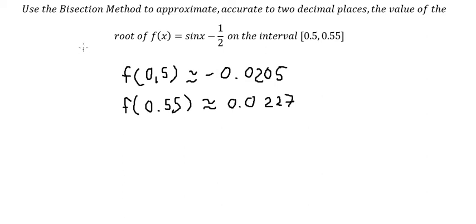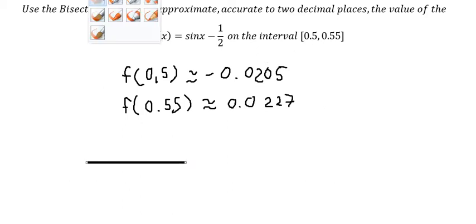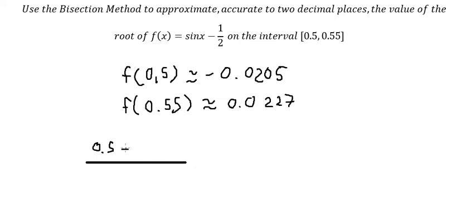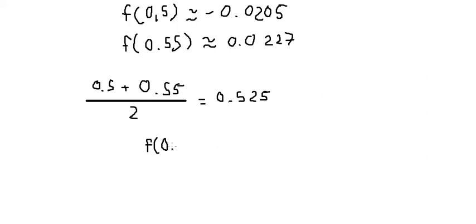Using the bisection method, we take the interval and compute the midpoint: (0.5 + 0.55) divided by 2, which gives us 0.525. We then evaluate f(0.525), which is approximately positive 0.00123121.